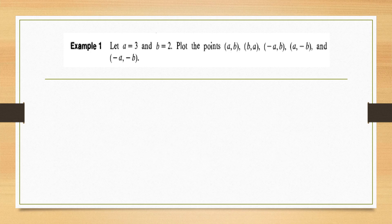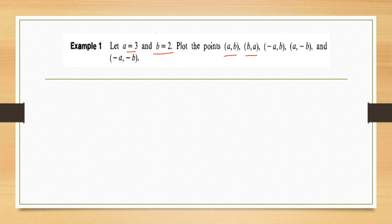Let's solve an example. We draw some points. A is equal to three and b is two. We have to plot some points: a comma b, b comma a, minus a comma b, a comma minus b, and minus a comma minus b.